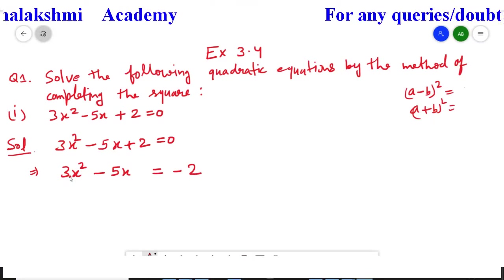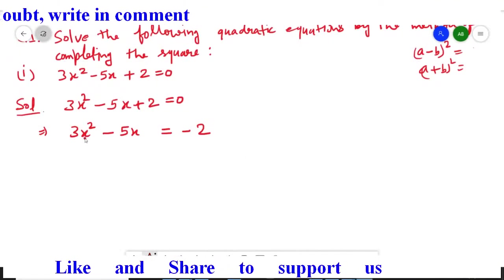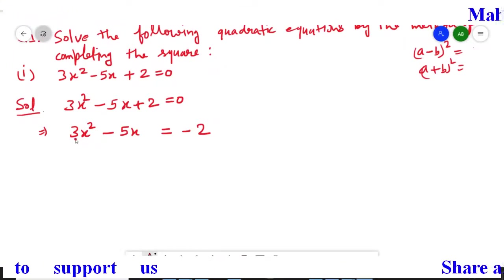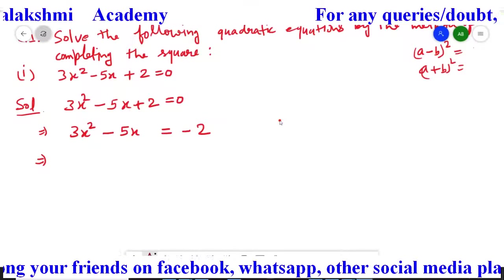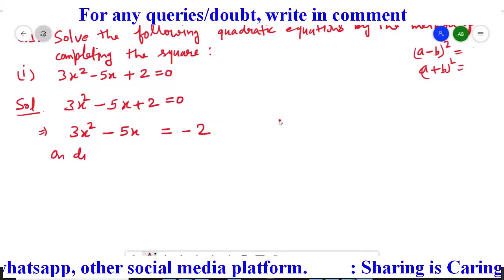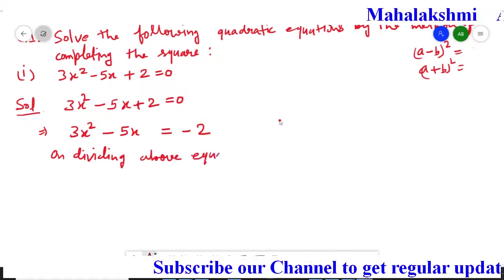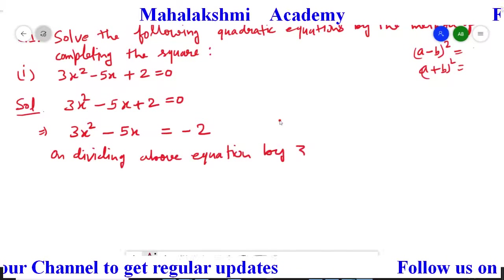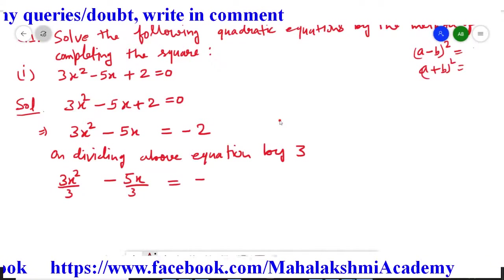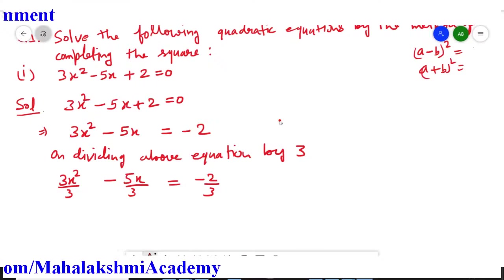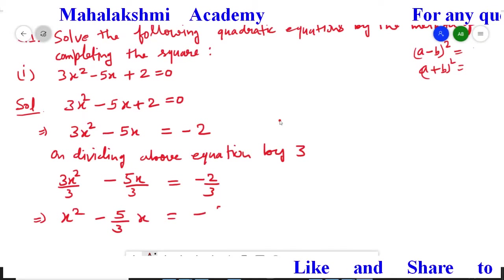Now in second step, whatever the coefficient of x² is, divide the complete equation by that. The coefficient of x² is 3, so we divide the entire equation by 3. We get 3x²/3 - 5x/3 = -2/3. The 3s cancel, giving us x² - (5/3)x = -2/3.